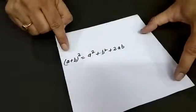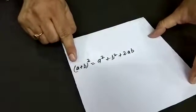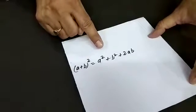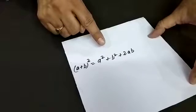In algebra we know that this formula (a+b)² is equal to a² + b² + 2ab.